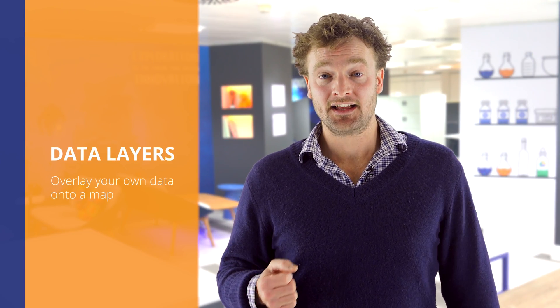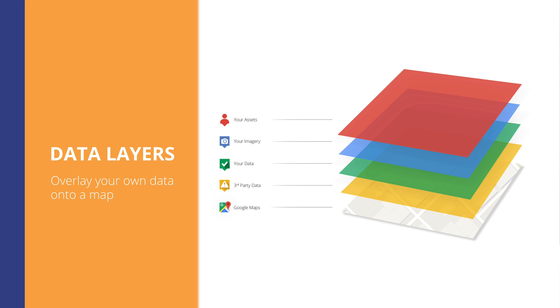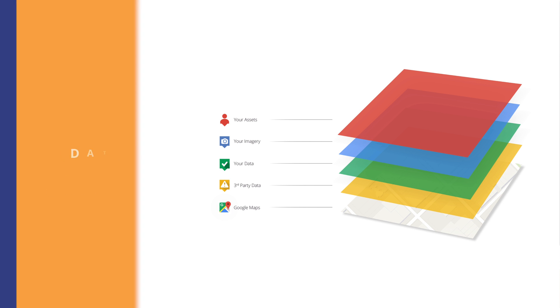And lastly, there's data layers. Data layers are incorporated into the core APIs and this lets you overlay your own data on top of a Google Map, which is useful for visualising business critical data.